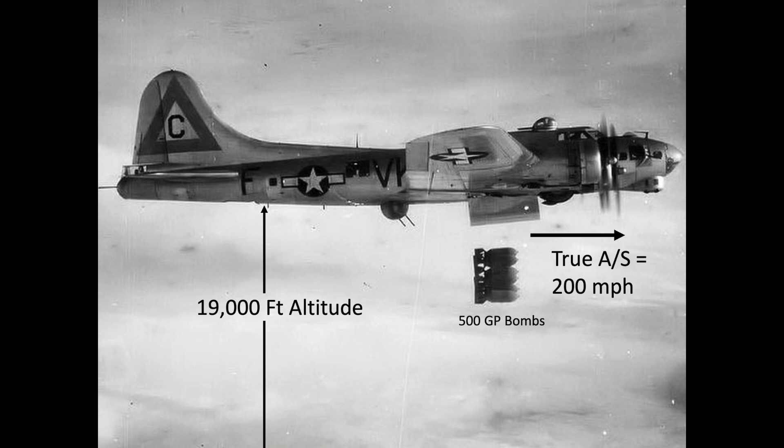Suppose a B-17 releases a 500-pound general purpose bomb at a formation indicated airspeed of 150 miles an hour at an altitude of 19,000 feet. Assuming no drift or headwind, an indicated airspeed of 150 miles an hour will equate to a ground speed of 200 miles an hour.